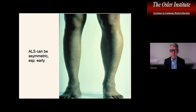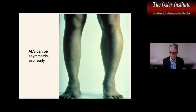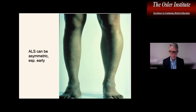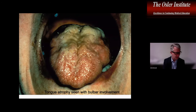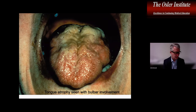Tongue atrophy can be seen with bulbar involvement, with excessive fasciculations in the tongue. Remember that there's very little adipose tissue over the tongue, so even in a normal tongue you can usually see fasciculations — fasciculations themselves aren't pathologic, but lots of fasciculations combined with atrophy are. The tongue also gets involved by cortical bulbar upper motor neurons, so it can become spastic and difficult to move. Bulbar onset in ALS causes problems with speech and swallowing.